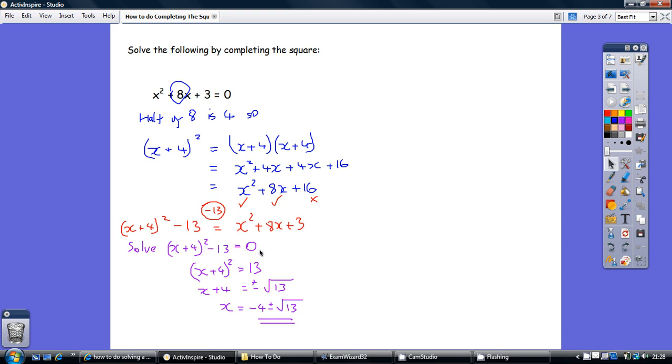And this is quite a straightforward rearrangement. Add 13 to both sides. Square root, that's where the plus or minus comes into play. The square root of 13 is plus or minus root 13. And then take away 4 from both sides. So, our solution is x equals minus 4 plus or minus root 13.